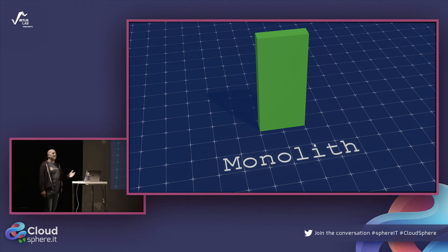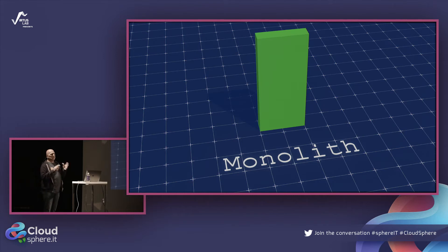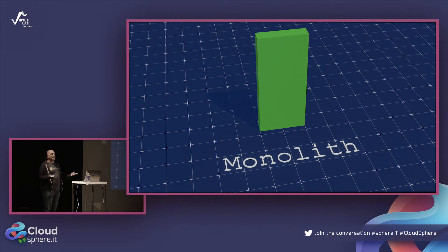The monolith has been around for a long time. Some people say a few decades; I say it's been around for half a century — since computing really took off in the 50s, 60s, and 70s. We were building monoliths back then and we're still building them. The technology has constantly improved, and there's a lot of us that know how to build monoliths. Some people ask why we're running away from them when we have good tools and expertise.